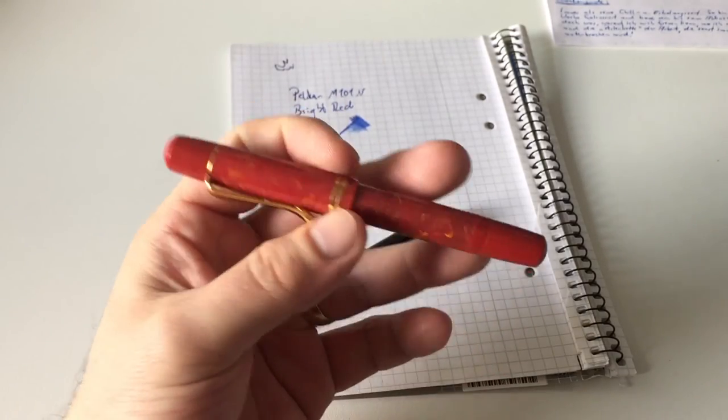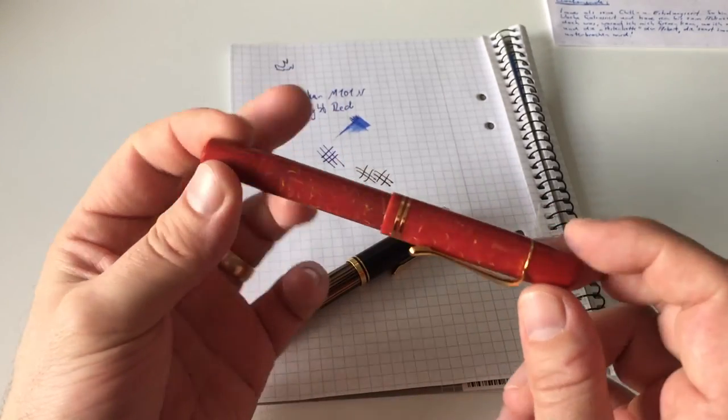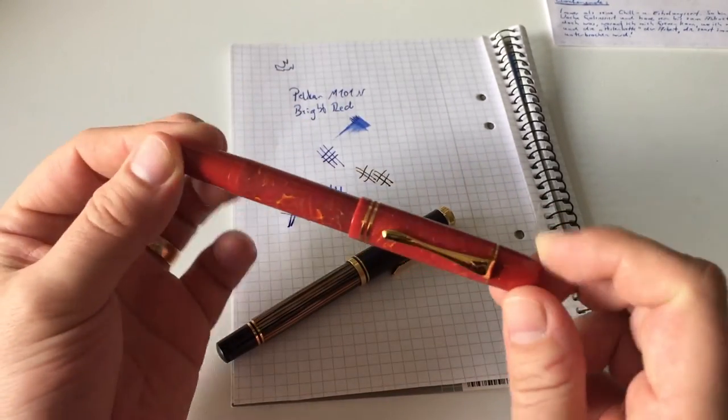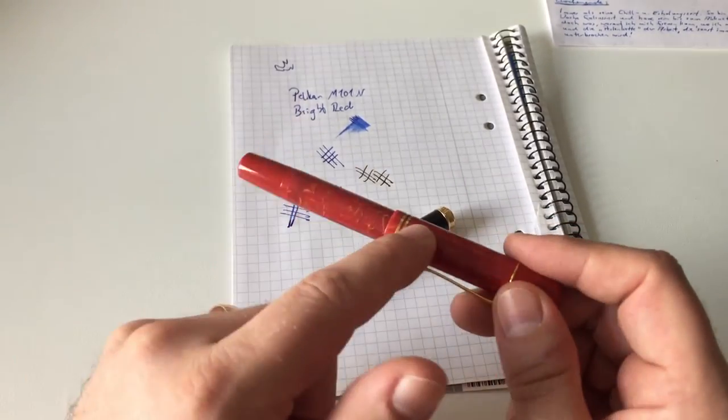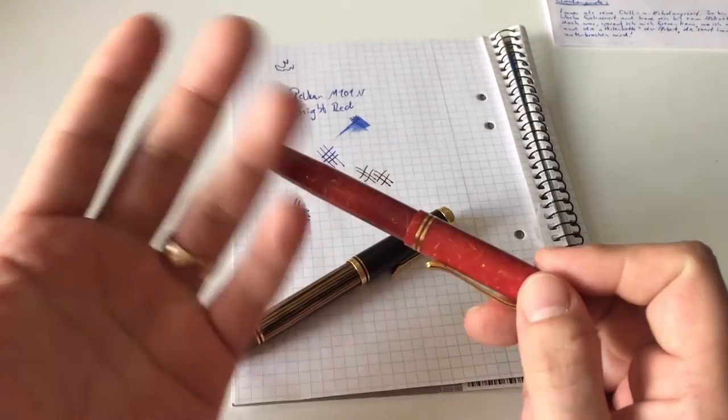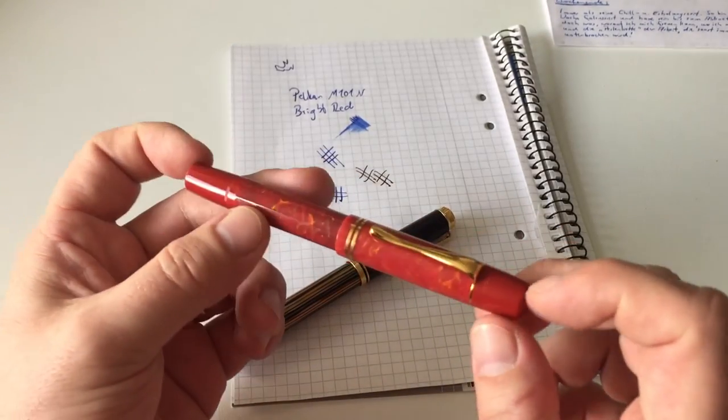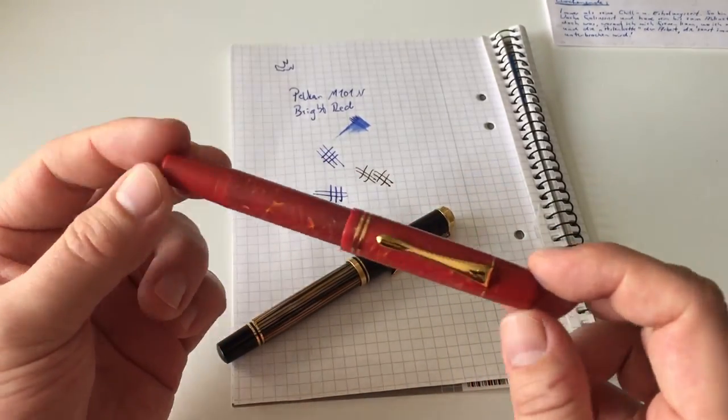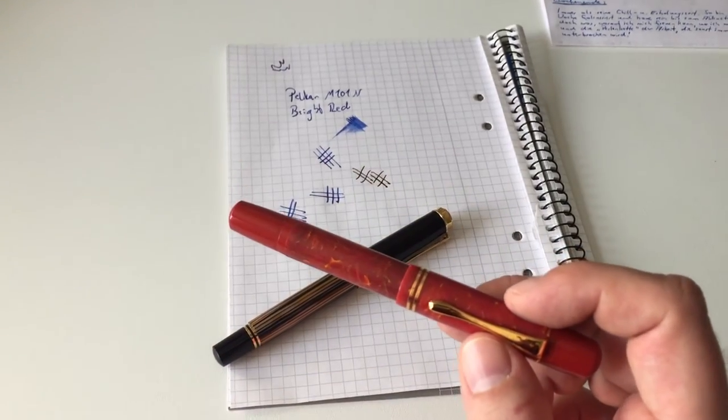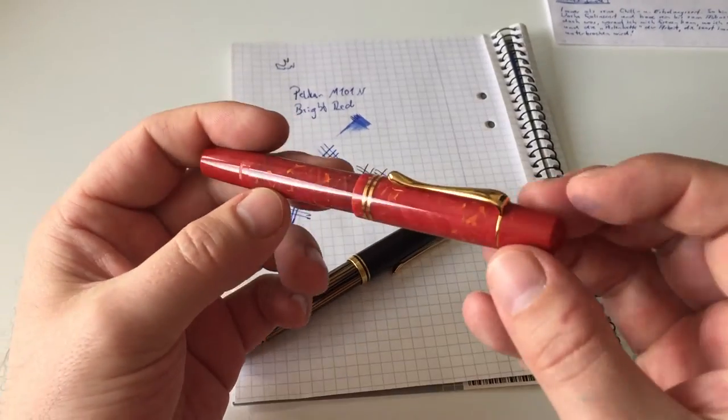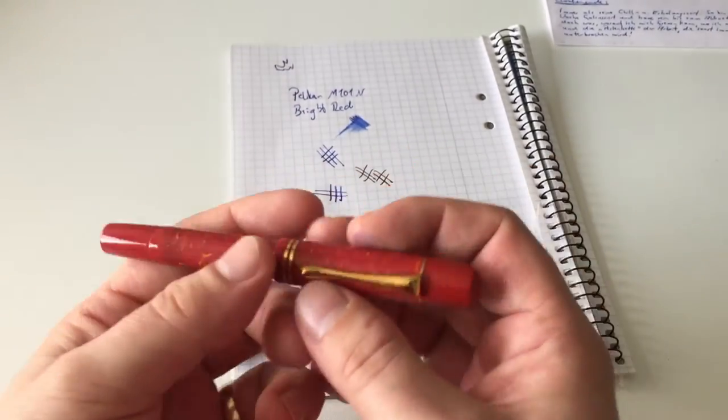The second thing is that those pens really normally, if you look at the older releases—the Lizard, the Brown, and Red Tortoise—they really retain their price quite well. Normally, I've checked the long run on eBay a little bit, and you pay between 300 and 600 euros or something like that for those pens. Depends a little bit on their condition and all that.